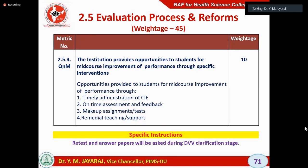Question 2.5.4 is a quantitative matrix. The institution provides opportunity for students for mid-course improvement of performance through specific interventions. In other words, the statute says only two examinations, but sometimes a student may miss one test. Do you have any methodology to go for mid-term correction? Timely administration of continuous internal assessment — some institutions go for three tests, and the best of two can be taken, or a surprise test.